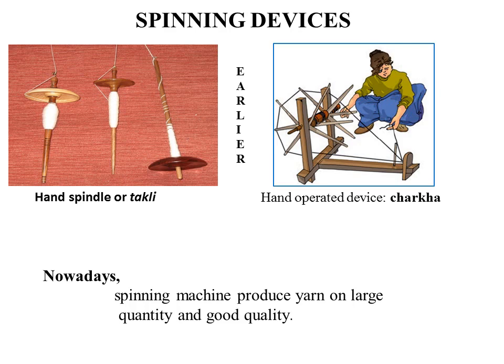Gandhi encouraged people to wear homespun yarn, termed as khadi, and to boycott the clothes of British people. They made a body called Khadi for poor villagers and also built an industry on khadi to make more cotton things. Nowadays, spinning machines produce yarn in large quantities and good quality due to advancement of technology.